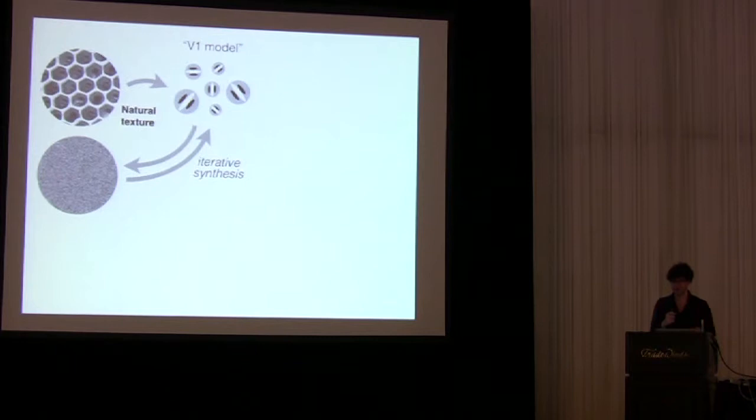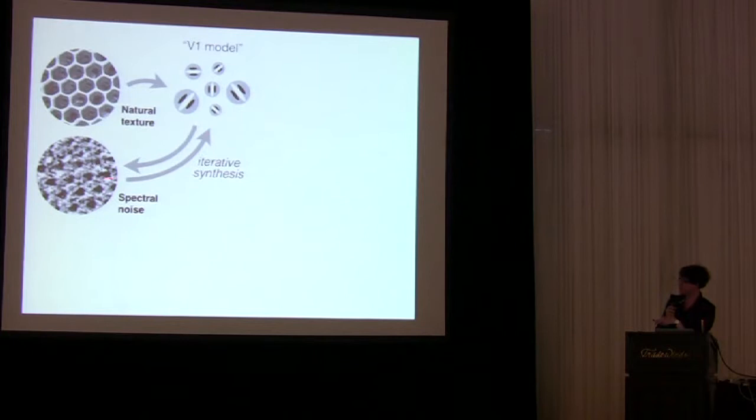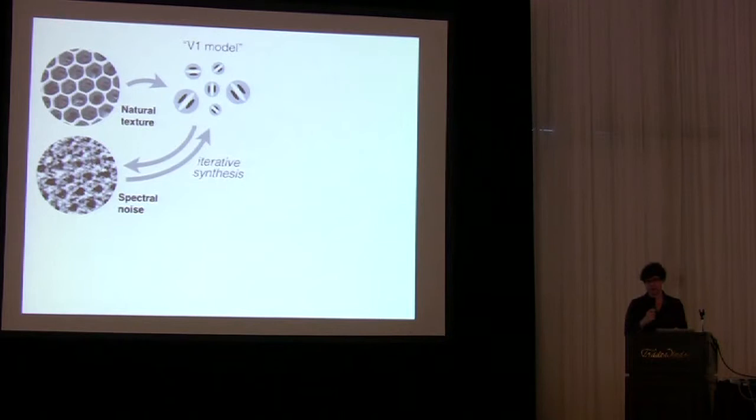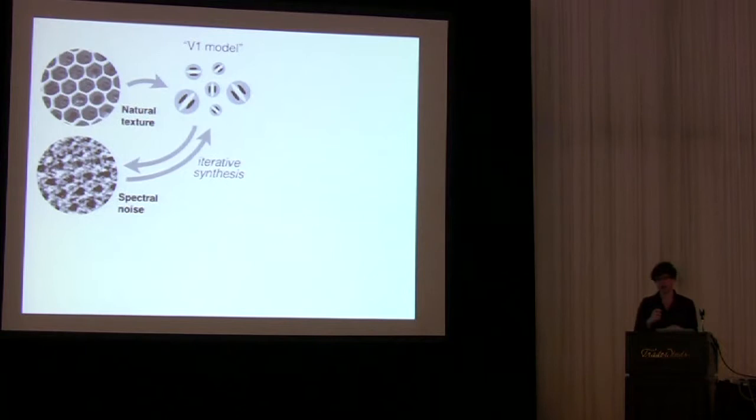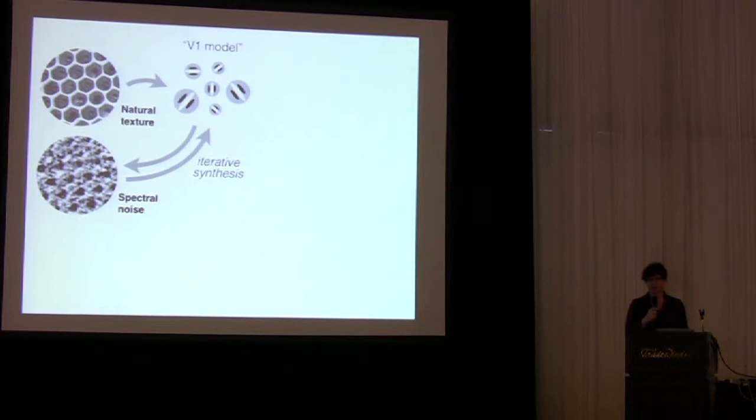And then take an image of random noise and iteratively adjust the noise so that it matches the output of that representation, the output of that representation as applied to the original image. And when we do that, we synthesize a new image, which I'll call spectral noise, that has the same overall orientation spatial frequency content of the original one, though you'll note that it lacks some of the more complex higher-order structure. There are certain dependencies in this image in terms of the co-localization of different kinds of elements that are lost or sort of smeared together if we only represent the overall orientation spatial frequency.